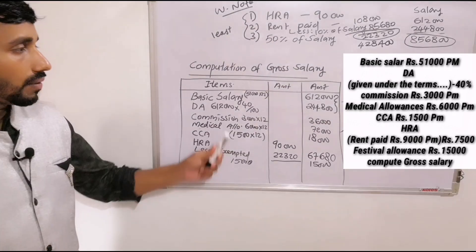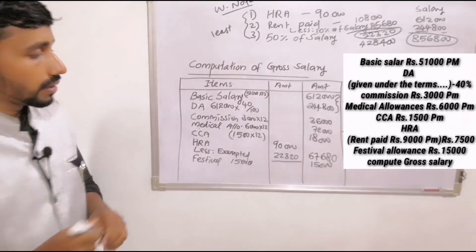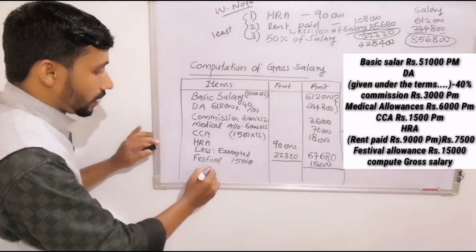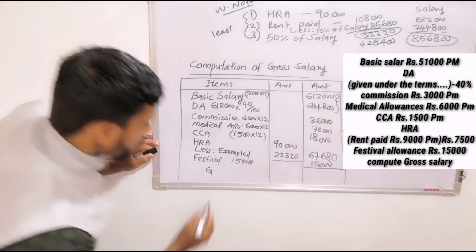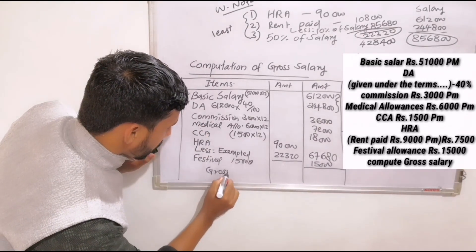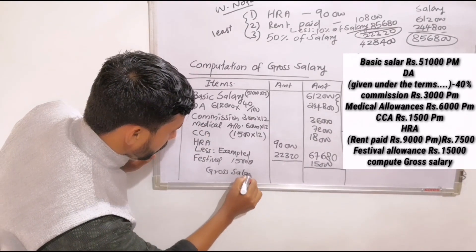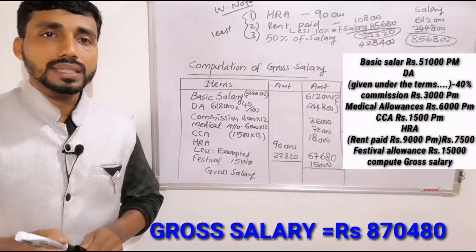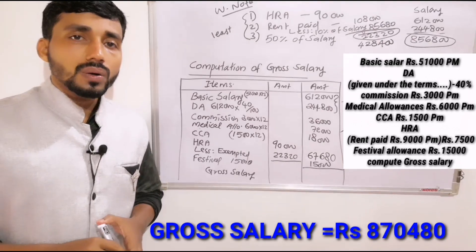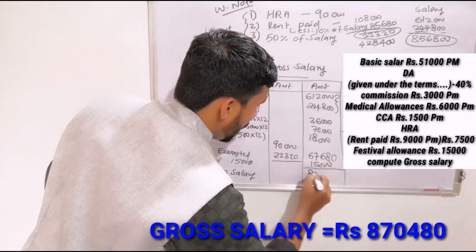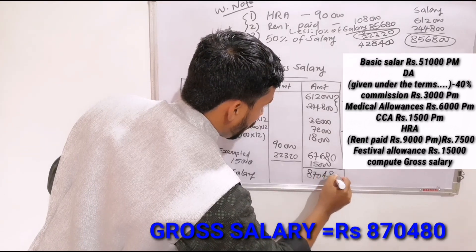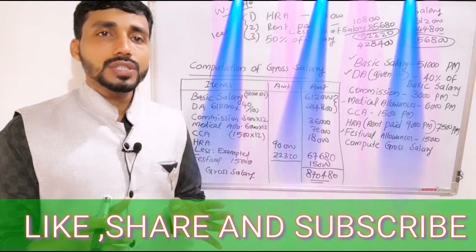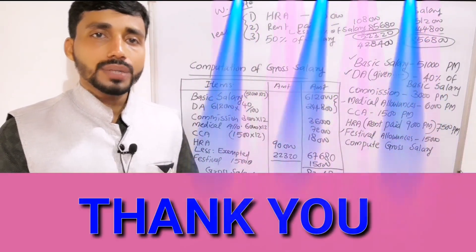We now total all the items to get the gross salary. The total gross salary is $8,70,480. If you liked this class, please subscribe to the YouTube channel. Thank you.